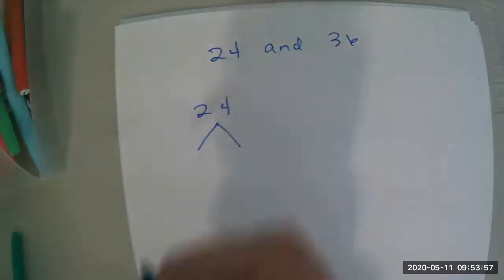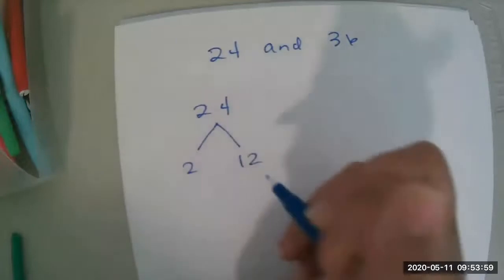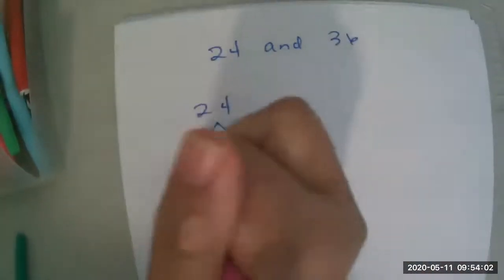And the factor tree is just what it looks like. It's a tree and it consists of all the factors that make up 24. So 24. I'm going to go ahead and use 2 times 12. Okay? 2 is a prime. So I'm going to circle a prime.